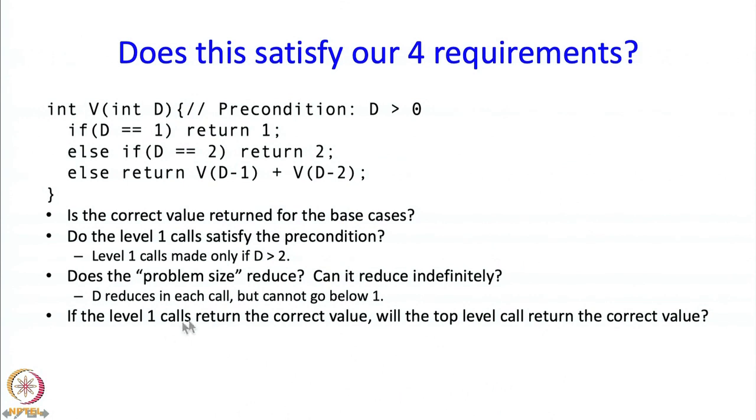Finally, the last check that we need to make is that if we assume that the level 1 calls return the correct value, then can you argue that the top level call is correct? This is the top level call, v of d. And we are assuming that these values are correct, v of d minus 1. So v of d minus 1 plus v of d minus 2. This is correct and this is correct. So in that case, are we supposed to return this? Well, we got to this only if d is bigger than 2. And in that case, indeed, we are supposed to return this. And therefore, the top level call is going to be correct if our level 1 calls are correct. This really does look like a good recursive function.